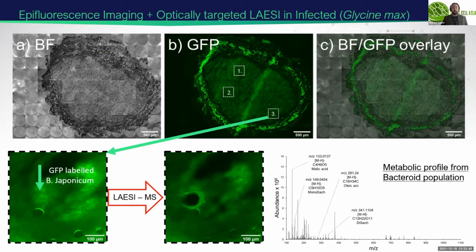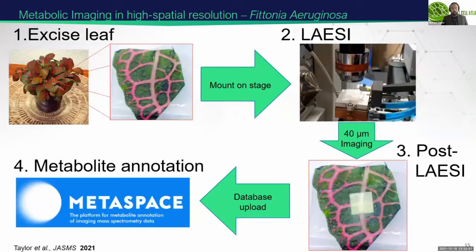This is a really exciting development and we're interested in further refining this system. Finally, to conclude, this is high resolution LAESI imaging of a leaf system. We took an ornamental leaf — you can see the leaf has areas of pigmentation, the pink region, the vein structure, and the chlorophyll-containing green region. We excise it, place it on the sample stage, perform LAESI imaging, and then upload the data to our online annotation platform, which allows us to assign structure based on the peaks that we detect.